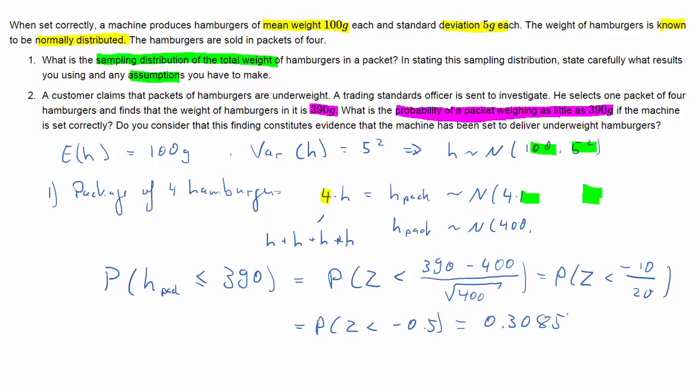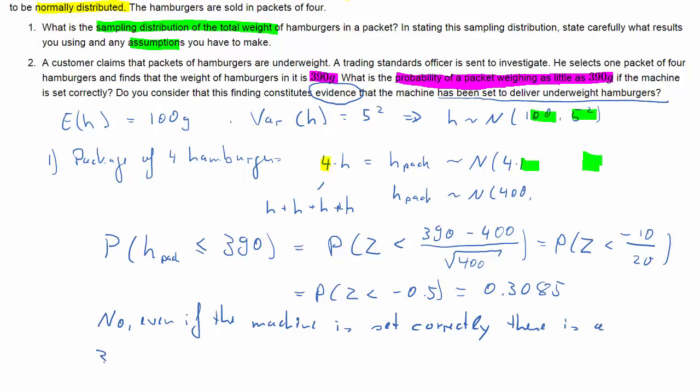The question now asks in addition whether we think that this result has delivered any evidence that the machine is set to deliver lighter hamburgers. Well, on the face of it, no, because even if the machine was set correctly there would indeed be about a 31% probability that the combined weight of the hamburgers in a pack of four is not larger than 390. So that's what we just calculated.